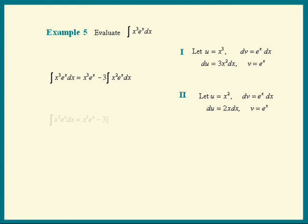The original integral now equals x cubed times e to the x minus 3 times—this is the second integration by parts substitution.